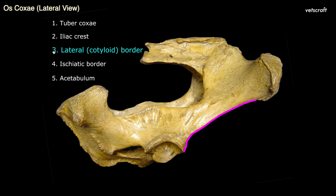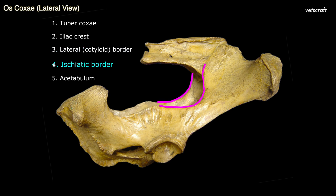The lateral or cotyloid border is a line which separates the gluteal surface and iliac surfaces. This border leads to the cotyloid cavity. The ischiatic border is the posterior border of ilium, which forms the greater sciatic notch. The green shaded cavity is the acetabulum, which is formed by all three bones of oscoxae. It is a cotyloid type of cavity.